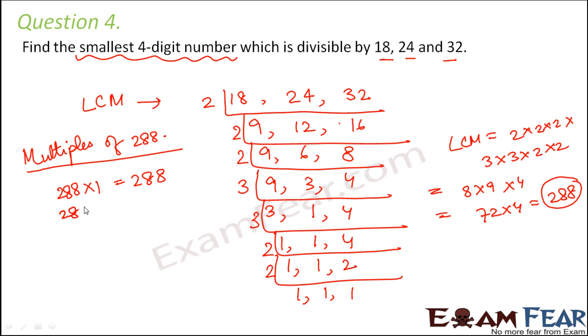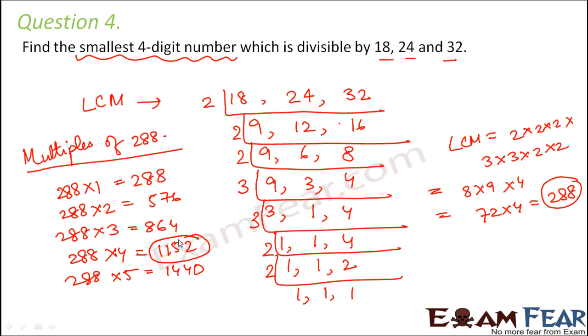So how will we find multiples of 288? 288 into 1 is 288, 288 into 2 is equal to 576, 288 into 3 is equal to 864, 288 into 4 is equal to 1152, 288 into 5 is equal to 1440. So which is the smallest 4-digit number? 1152.